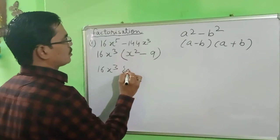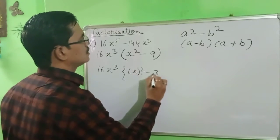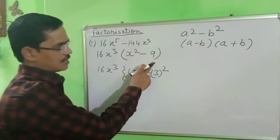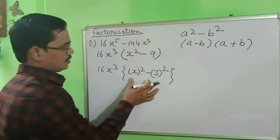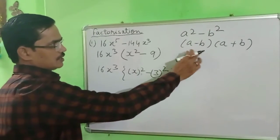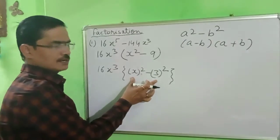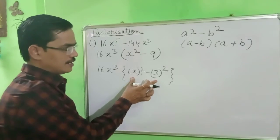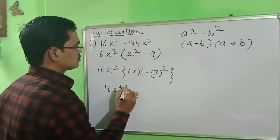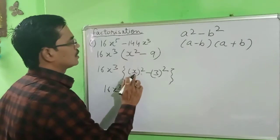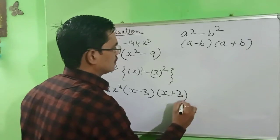According to this formula we can write x² minus 3², because 3² means 3 times 3 which is 9. So according to the a² minus b² formula, one time we subtract and one time we add. In this way we get 16x³ times (x minus 3)(x plus 3). This is how you can solve it very easily.